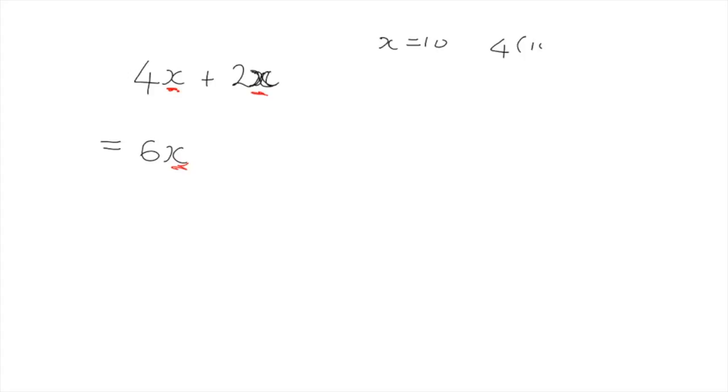For x equal to 10, what you'll get is you'll get 4 tens plus 2 tens. So if you've got 4 tens plus 2 tens, you've got 4 of the tens and you've got another 2 of the tens, obviously you're going to end up with 6 tens, which is 60.